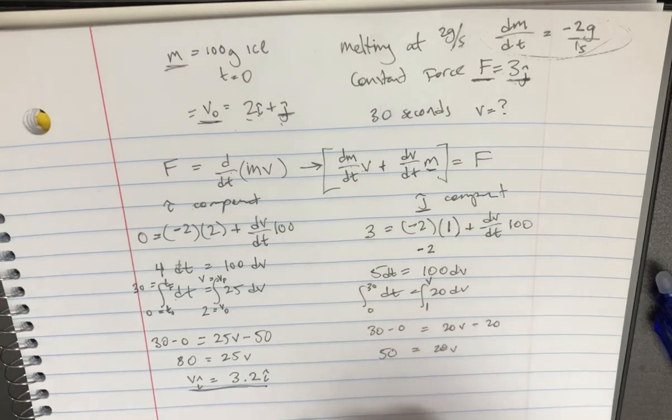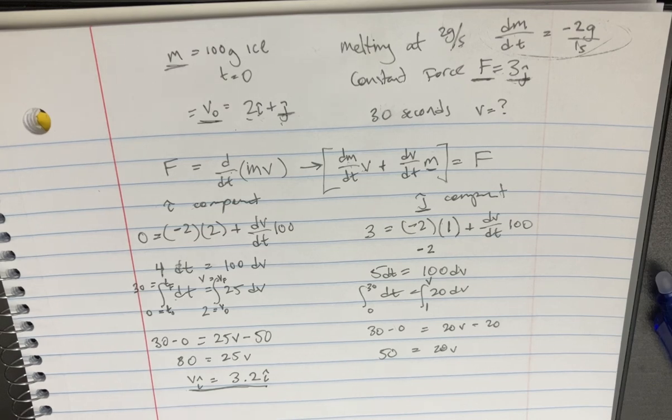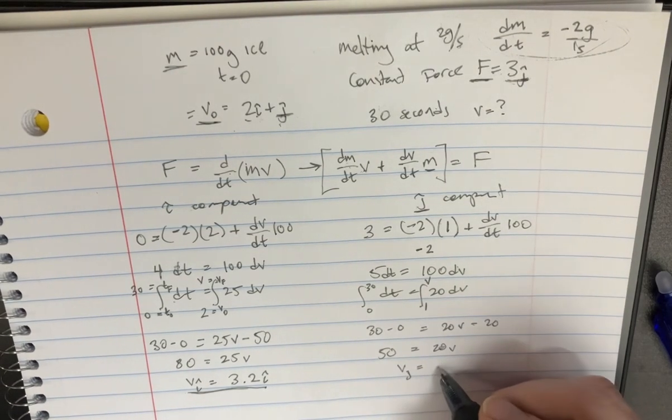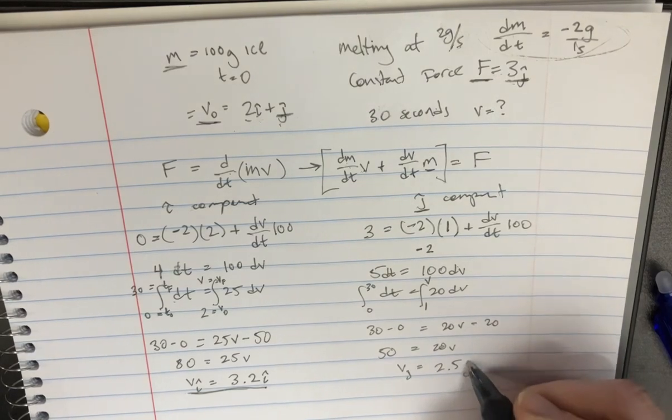And the final answer, 50 divided by 20 is 2.5. So vj is equal to 2.5j here.